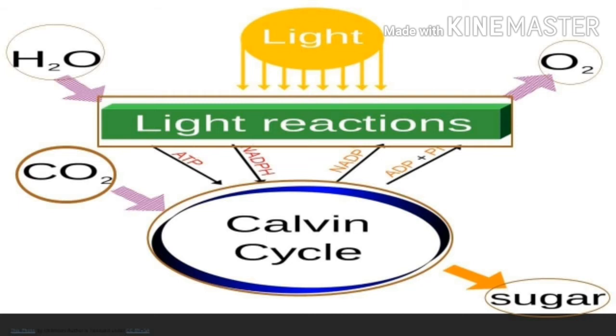The Calvin cycle, also known as the dark reaction, is a light-independent phase that takes place in the stroma and converts carbon dioxide into sugar. This stage does not need light energy but needs the products of the light reaction, thus it occurs immediately after the light-dependent phase.